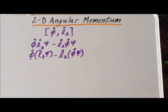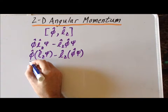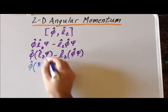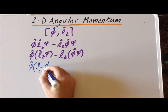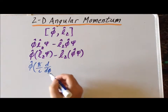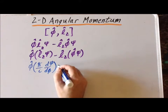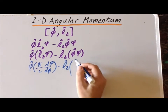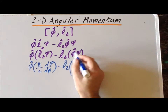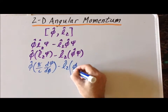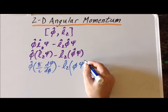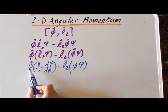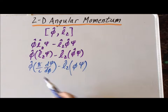Next we'd like to rewrite these expressions using the actual mechanical values of these operators. We keep the angle operator as is, but now we fill in the actual value of the angular momentum operator, which is h-bar over i times the derivative with respect to phi, acting upon the wave function psi. For the second term, the angle operator phi simply multiplies phi times the wave function psi.